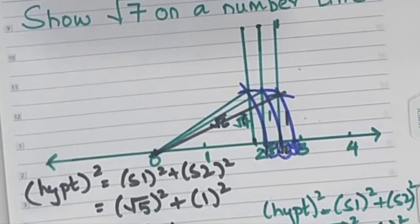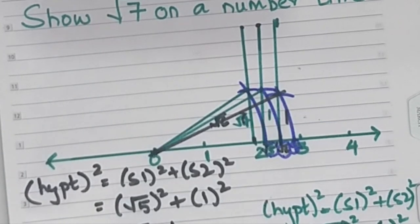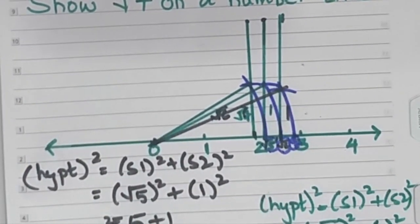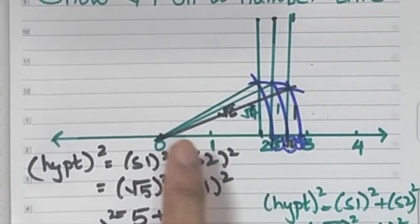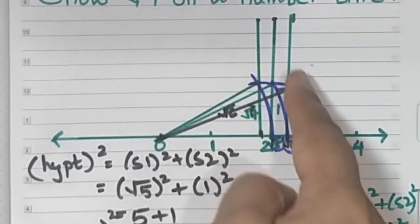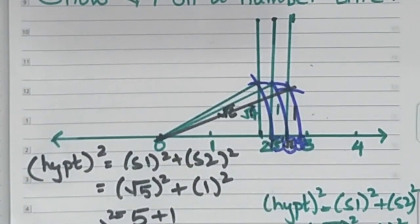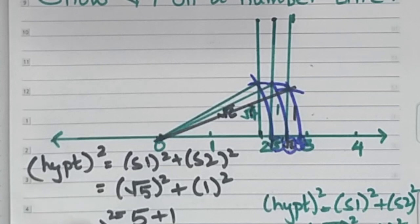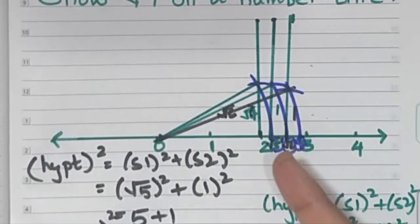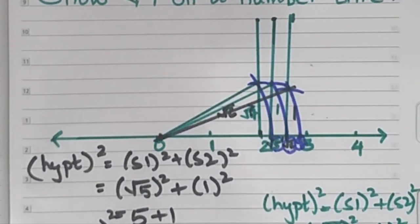So children, in order to plot root 7, first what you have to do is you have to plot root 5, then plot root 6, and then plot root 7. You basically have these 3 lines after 2. Root 5 we've already done in previous video. Now we've seen after plotting root 5, how to plot root 6 and how to plot root 7. Thank you.